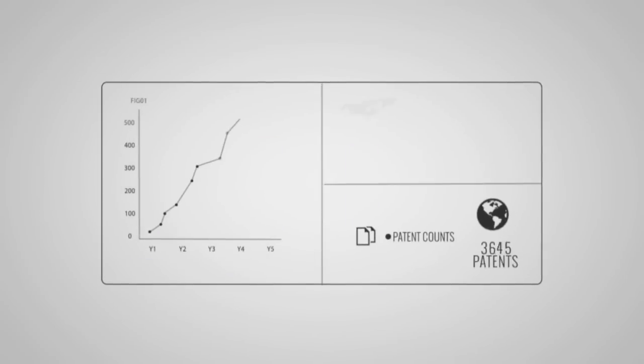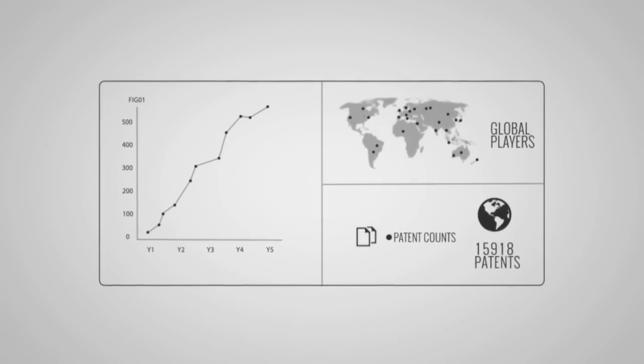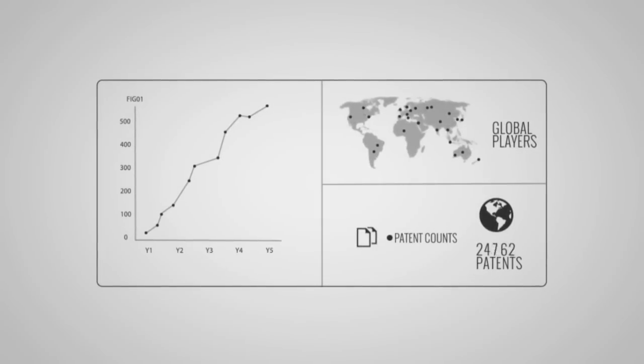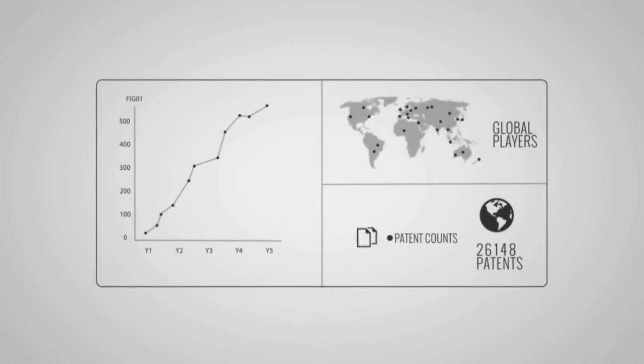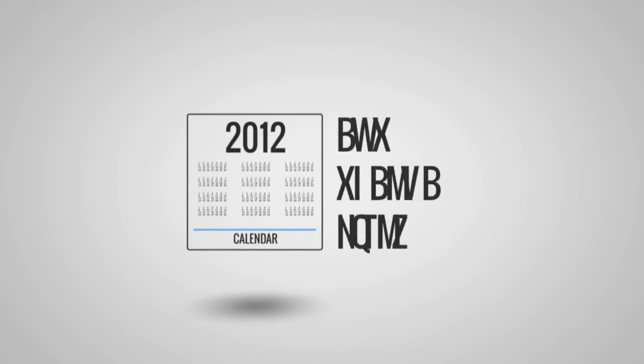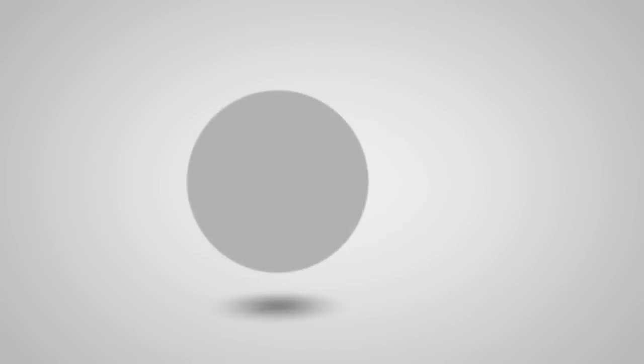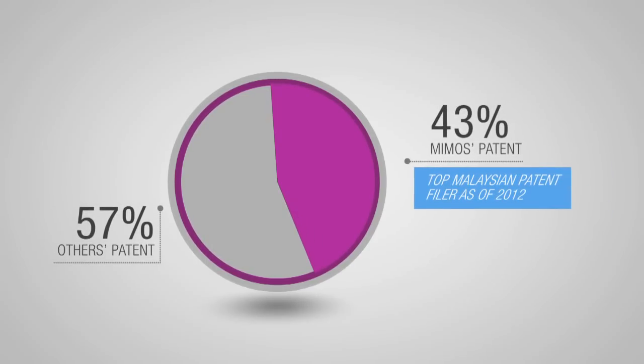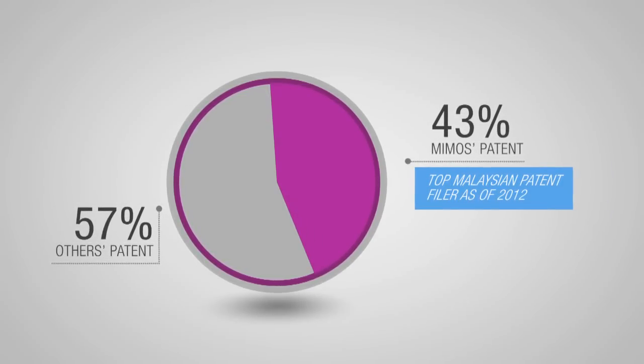To ensure continuous growth and position Malaysia on par with global players, high targets are set for patent filing and disclosures. In 2012, MIMOS became the top Malaysian patent filer at the Patent Cooperation Treaty, contributing 43% of Malaysia's total filed patent applications.